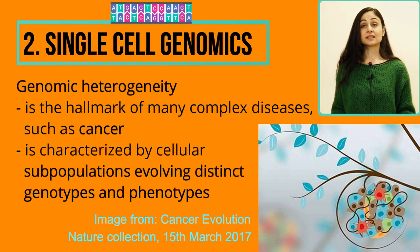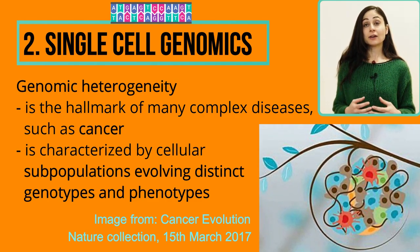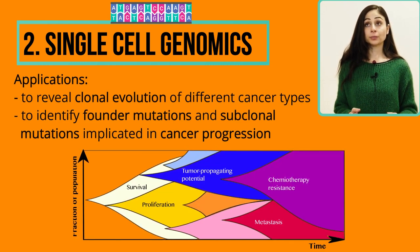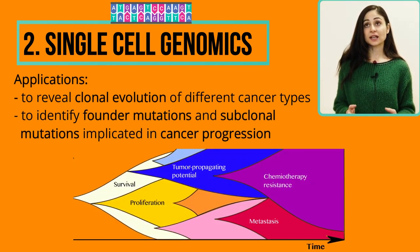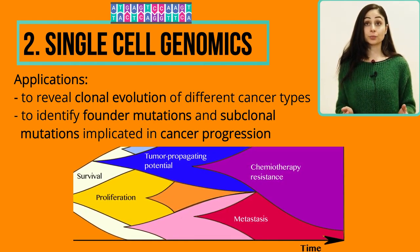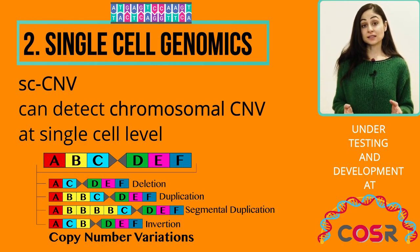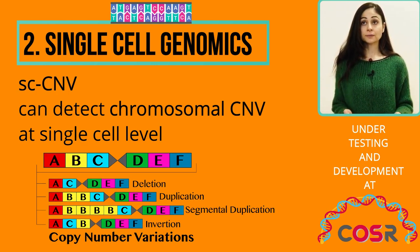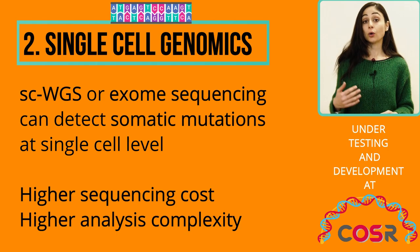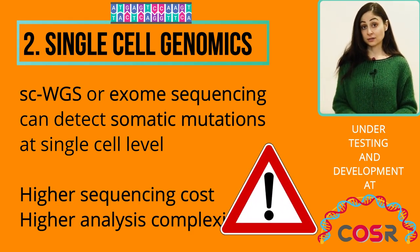The second case is single-cell genomics. Genomic heterogeneity is a hallmark of many complex diseases, such as cancer, characterized by cellular subpopulations evolving distinct genotypes and phenotypes. Single-cell DNA sequencing was successfully employed to reveal that multiple cancer types can undergo clonal evolution, and to identify founder mutations and subclonal mutations implied in cancer progression. We can detect chromosomal copy number variation at single-cell level with affordable cost, but also somatic mutations using whole-genome single-cell sequencing or exome sequencing, though in this case with higher sequencing cost and higher analysis complexity.